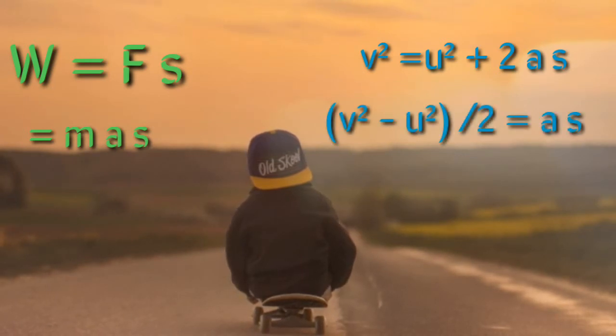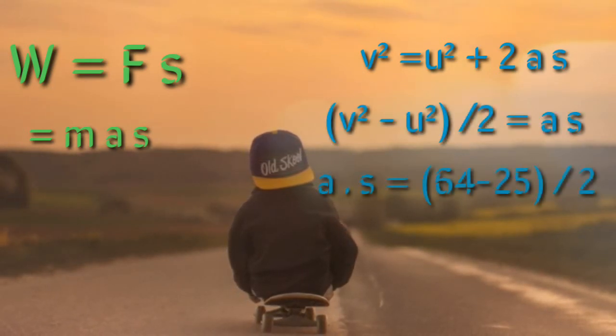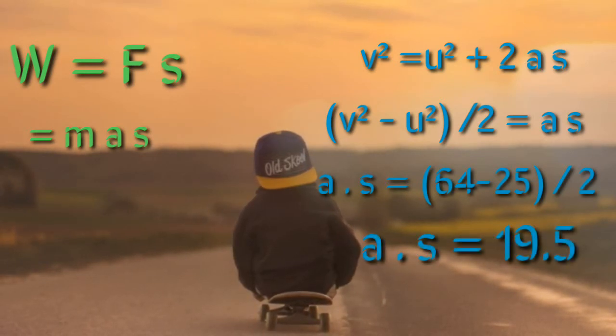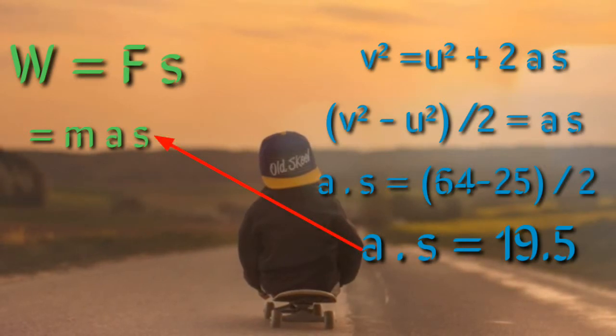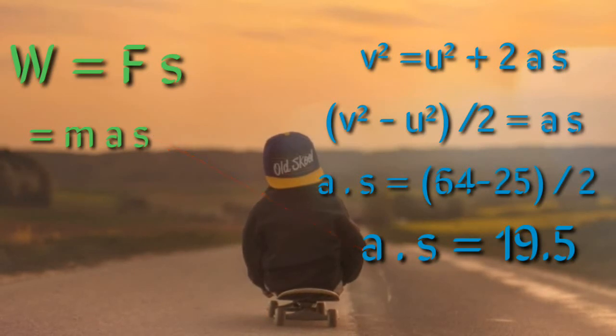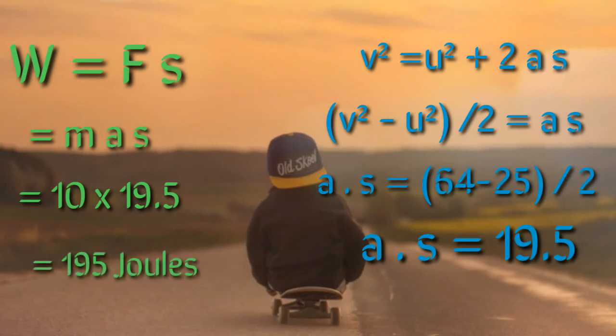Now putting the values of initial velocity and final velocity here we get the value of a into s which is equals to 19.5. So if you substitute this value of a times s in the formula of work done, we find the value of work done to be equal to 195 joules which is exactly the same as the energy transferred to that body.